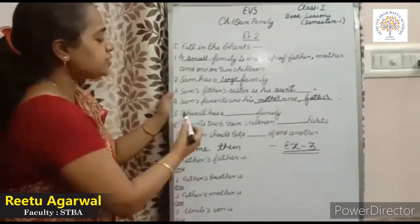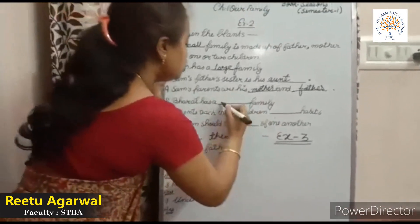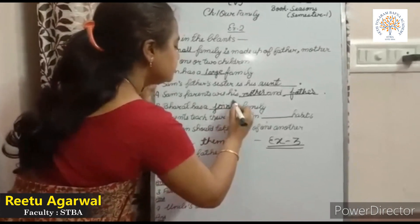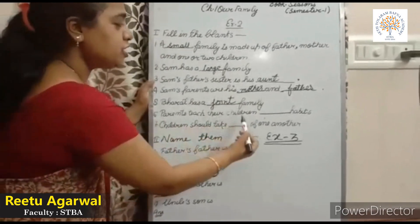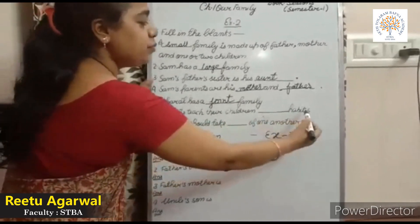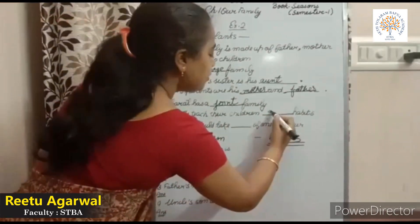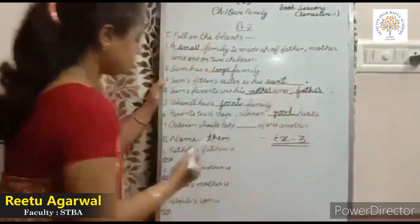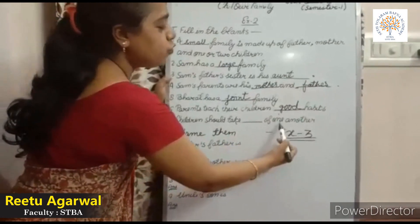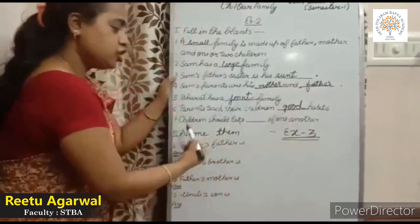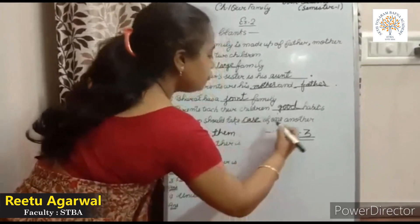Bharat has a blank family. Bharat has a joint family. Parents teach their children blank habits. Parents teach their children good habits. Children should take blank of one another. Children should take care of one another.